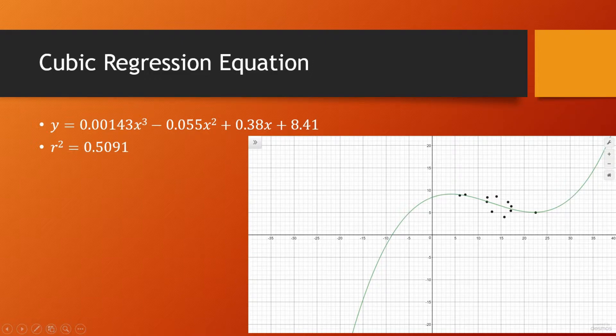So for our cubic regression equation we calculate it to be an r squared value of 0.5091. This is the best r squared value we found so far and as you can see this is modeled by the graph on your right. The equation actually intersects a lot of the points on the graph and is very well spaced from all the data points.